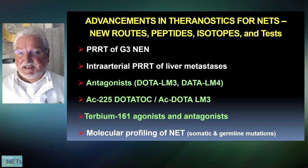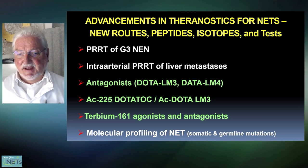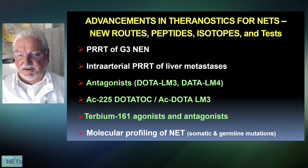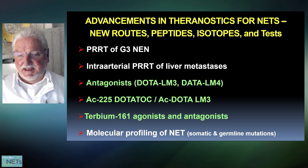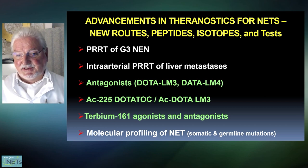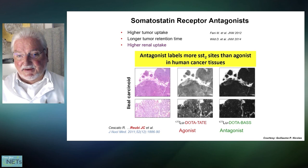There have been recently a number of advancements in theranostics for neuroendocrine tumors, which are listed on this slide. My topics will be DOTA LM3 and DATA LM4, which are new antagonists, as well as use of alpha emitters, mainly Actinium, but I will also mention Lead-212. And finally, terbium agonists and antagonists, which are discussed very shortly.